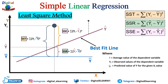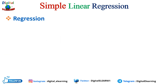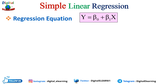A residual is the difference between the observed value and the predicted value. If data points fall above the regression line, the residual is positive; if they fall on the line, it is zero; and if they fall below the regression line, it is a negative residual. Data points usually don't fall on the best fit line and are scattered around it. The residual is the vertical distance between the data point and the regression line.